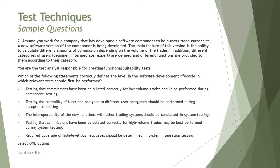Option C — the interoperability of the new function with other trading systems should be conducted in system testing. We are talking about suitability, so interoperability has nothing to do with it, and you must have done your suitability internally first. So options A, B, and C are ruled out, and we need to pick two options. Option D — testing that commissions have been calculated correctly for high volume trades may best be performed during system testing. Yes, it can be done because suitability is generally conducted at integration, but system testing is also part of functional testing, so high volume trades can be tested in system testing.